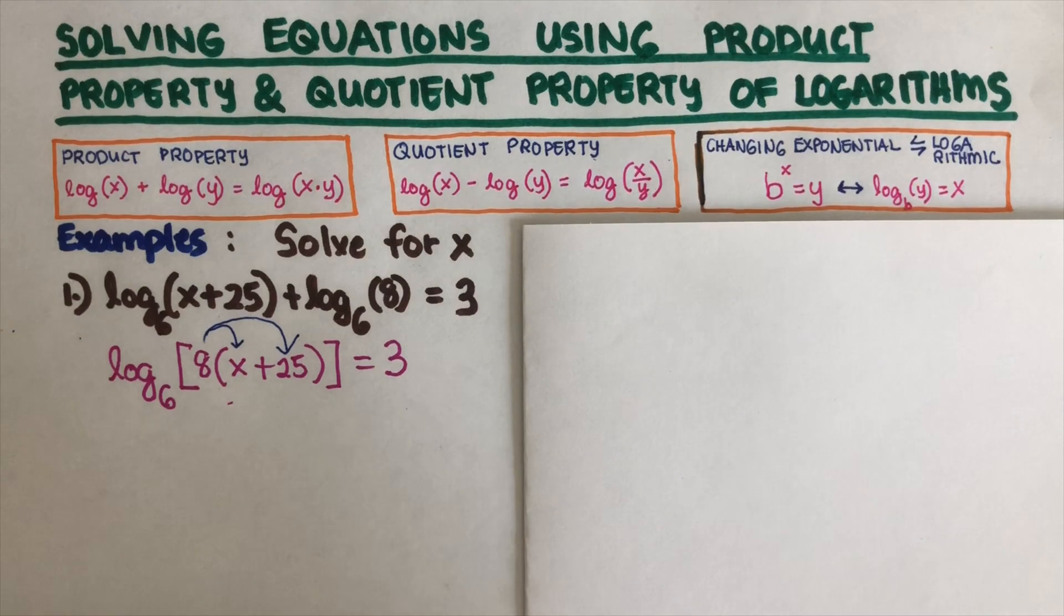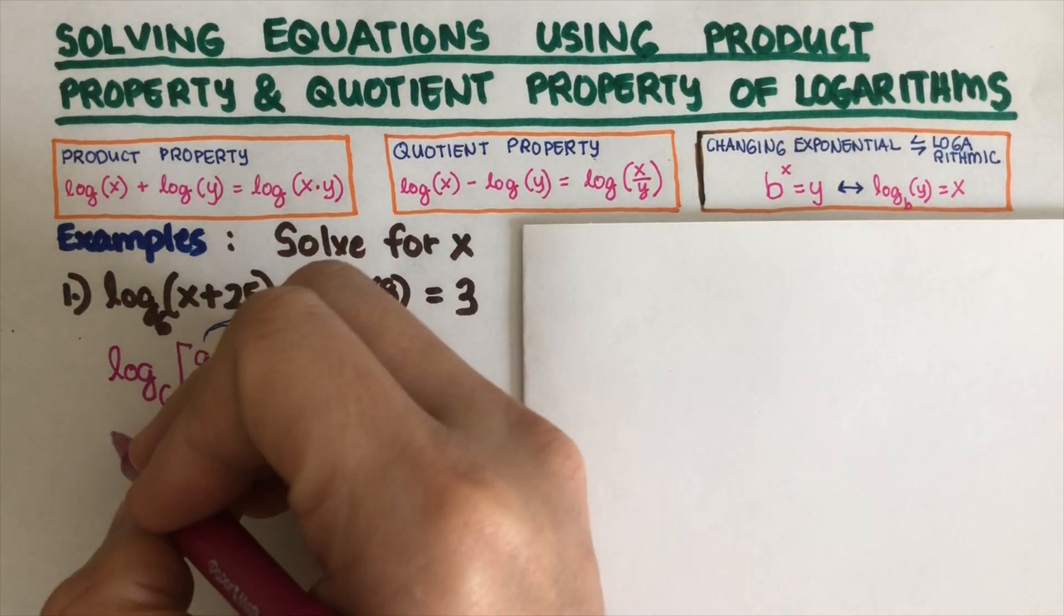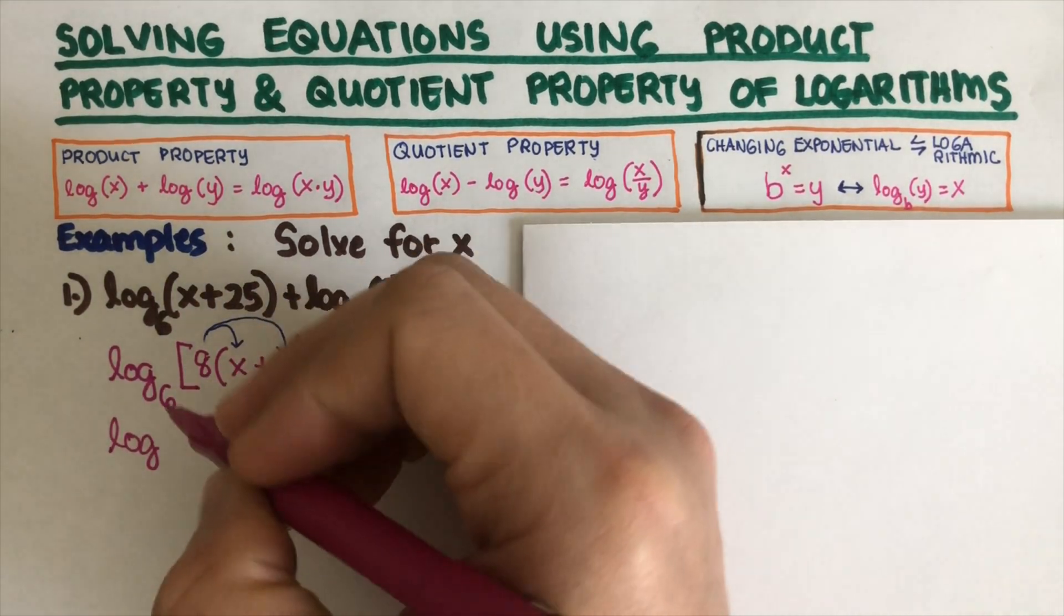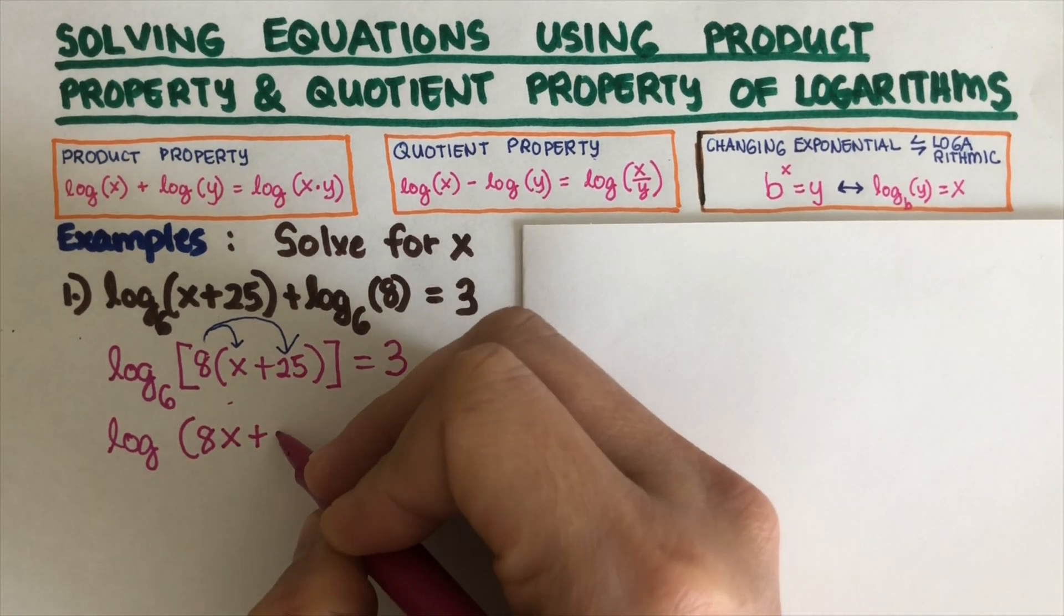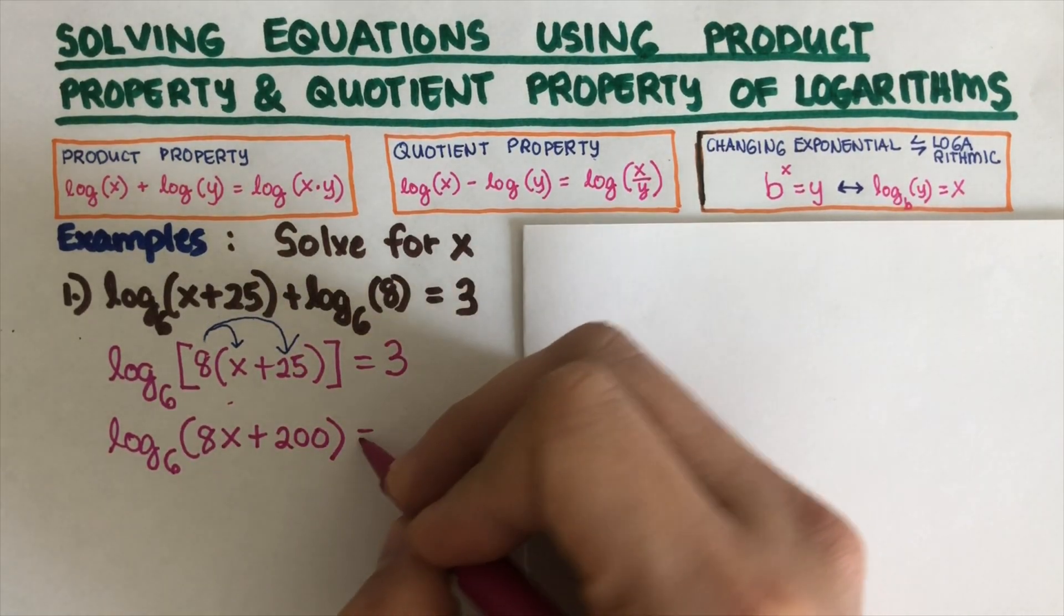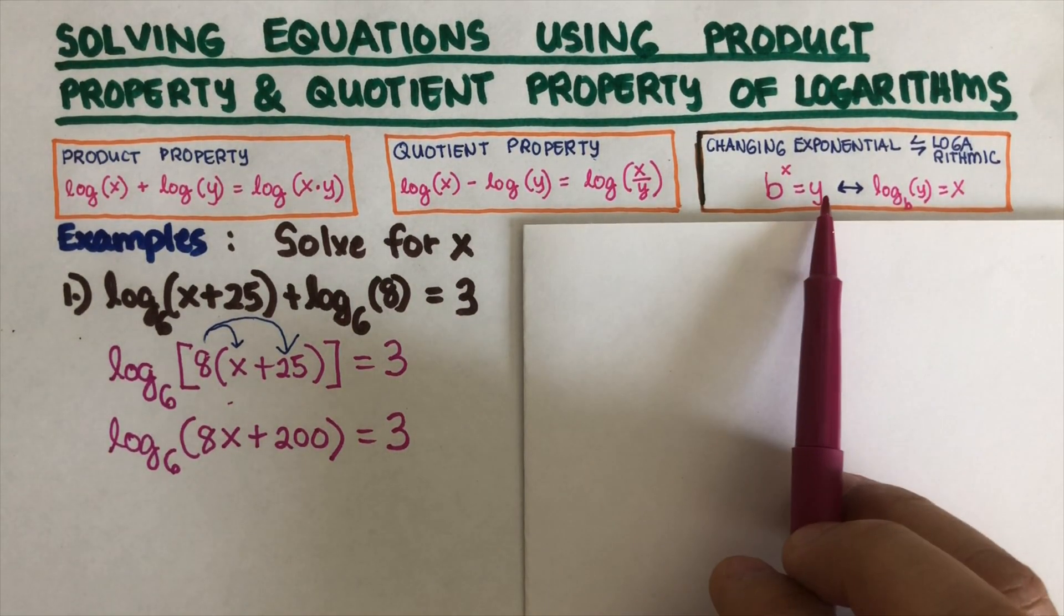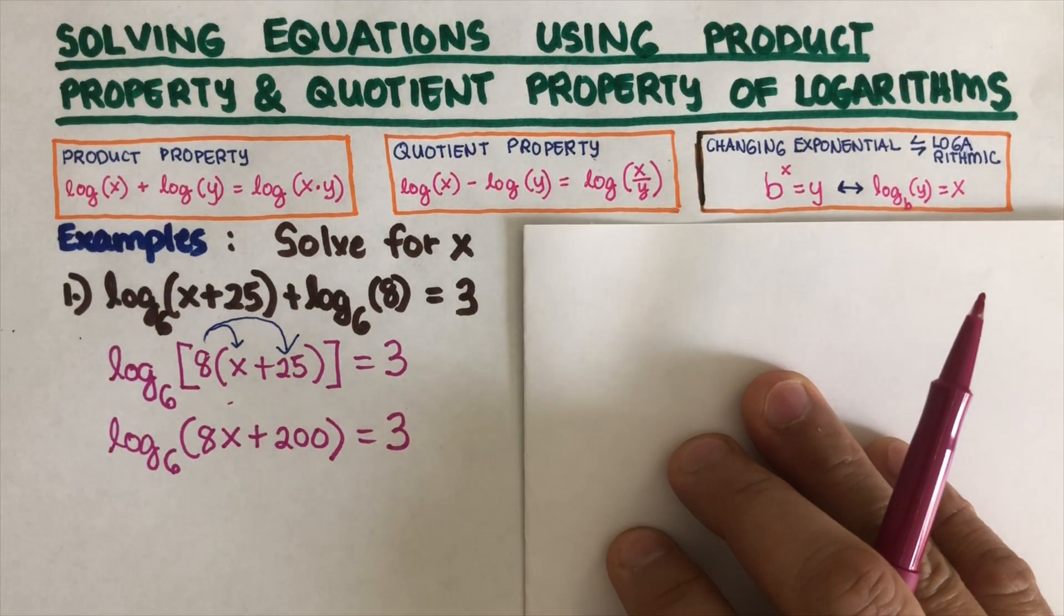The next thing that we are going to do is to distribute the 8 to both terms inside the parentheses. This would come out to be log of 8x plus 200 to the base 6 equals 3.